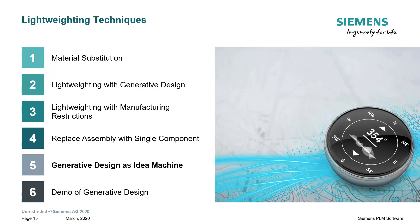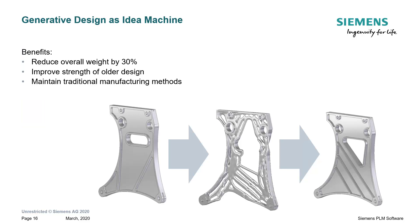Here's an approach you may not have thought of: using generative design as an idea machine. Going back to our aerospace example, we created a generative design of the part, but because we wanted to maintain original traditional manufacturing methods, we simply modified the design so that it looked similar to the generative design model while reducing weight. This allowed us to reduce the overall weight by 30 percent while still maintaining traditional manufacturing methods.